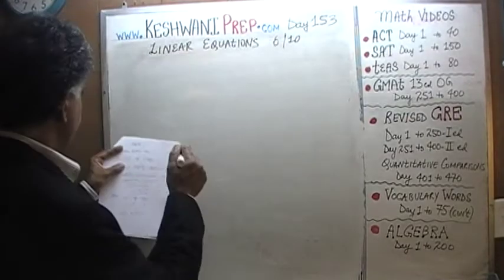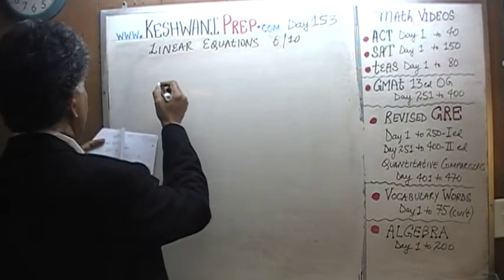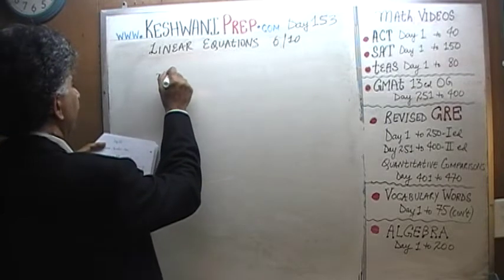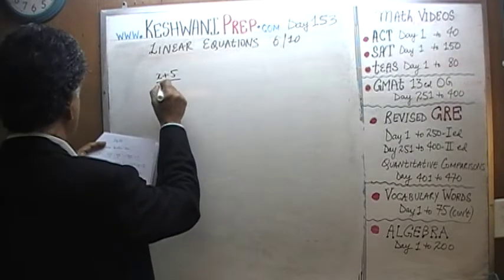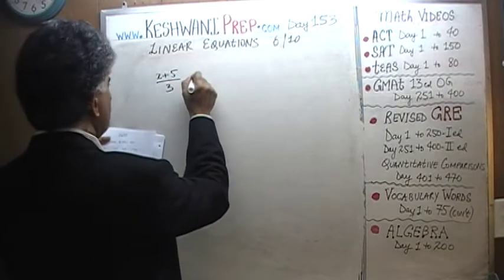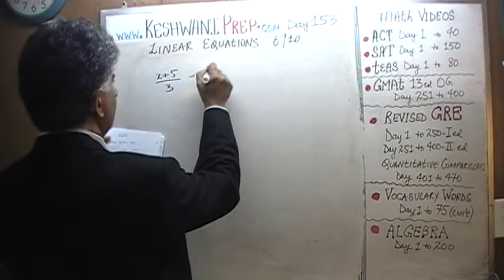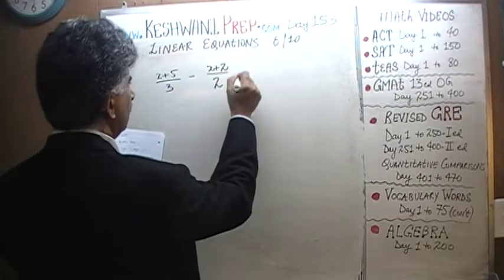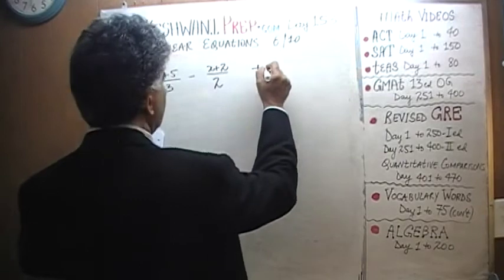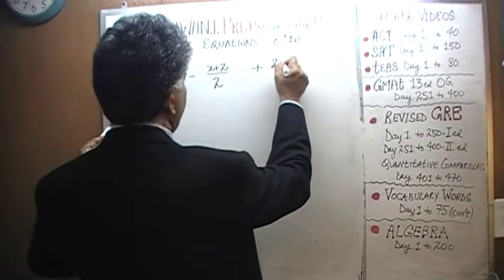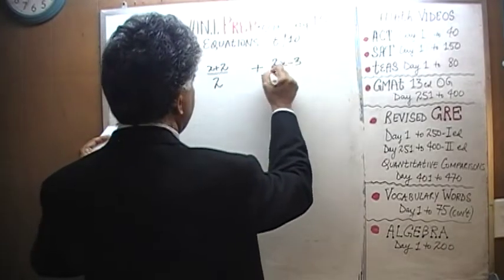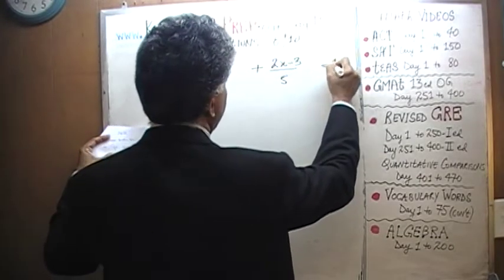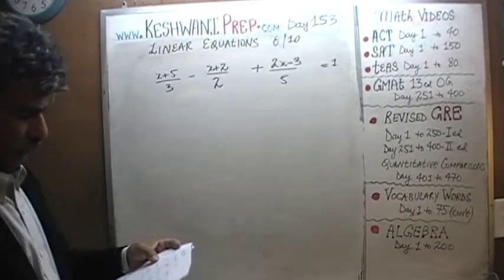We are told that x plus 5 over 3, minus x plus 2 over 2, plus 2x minus 3 over 5, equals 1.